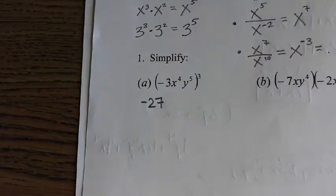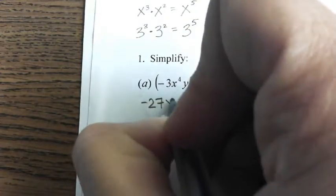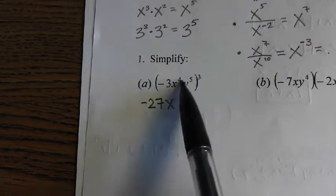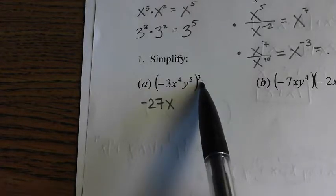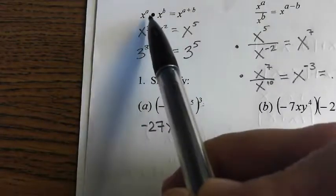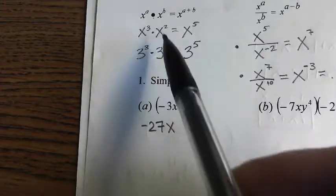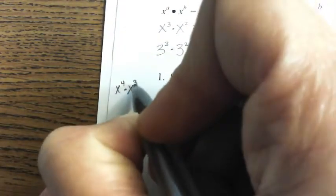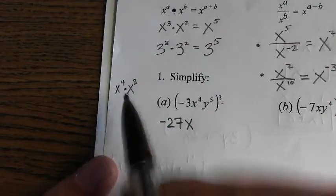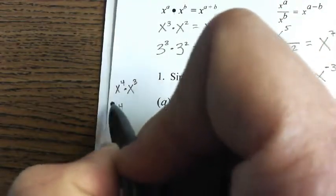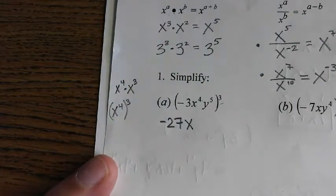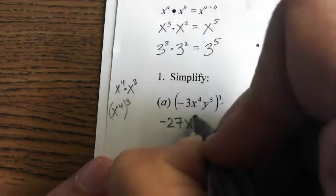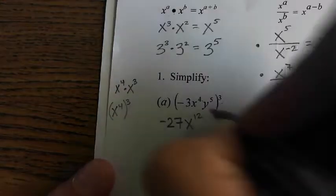Next. You added them. Right? To get seven. Four plus three. That's when they have common basis. Like, x to the fourth times x to the third. That would be x to the seventh. This is more of x to the fourth to the third. Very good. See the difference side by side like that? Perfect.